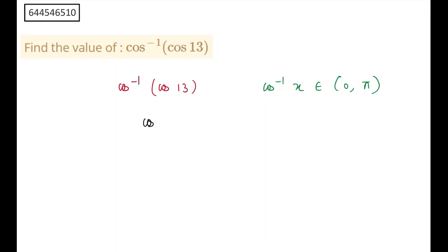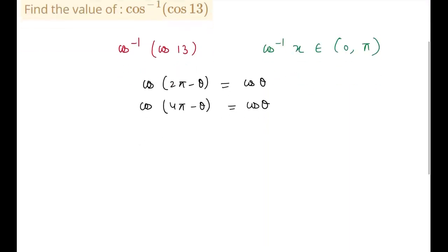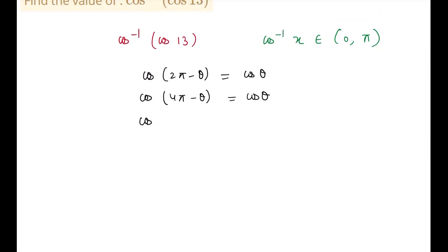We know that cos 2π minus θ is cos θ. And we also know that cos 4π minus θ is also equal to cos θ. And I can say that if I write cos minus of 4π, I'm taking minus common. Therefore, I'll get cos of θ minus 4π. And this term cos of minus would be plus. Therefore, I'll get my term as cos of θ minus 4π, which is also equal to cos of θ.